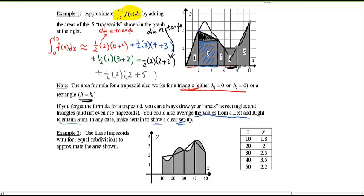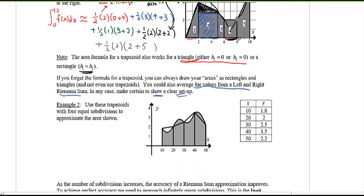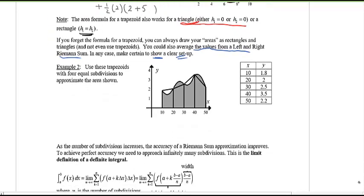All right, let's look at example number two. So, this time, weird shape. I want you to use these trapezoids with four equal subdivisions this time to approximate the area shown here. So four equal subdivisions. I'm looking at this and saying, hey, starts at 10, ends at 50.